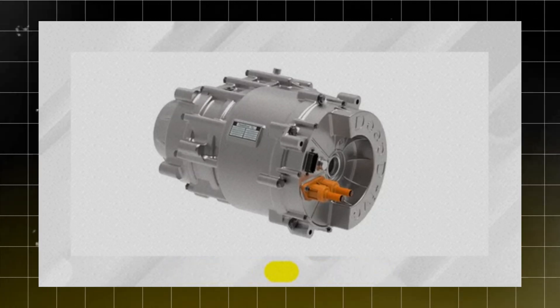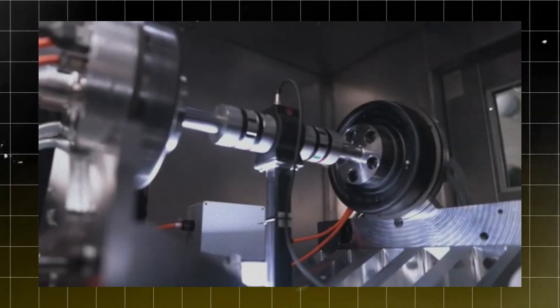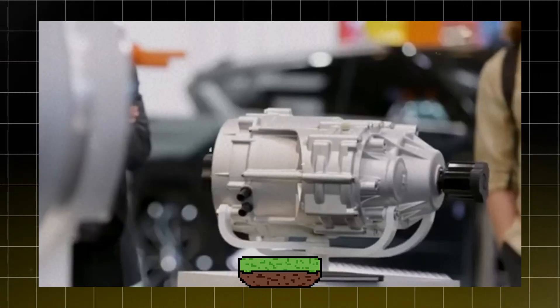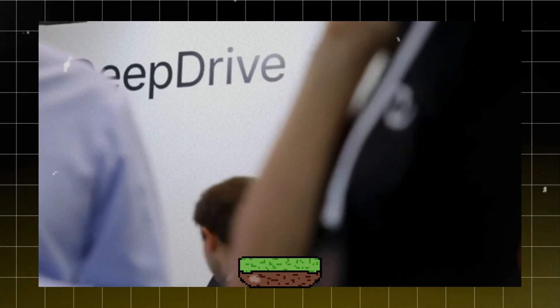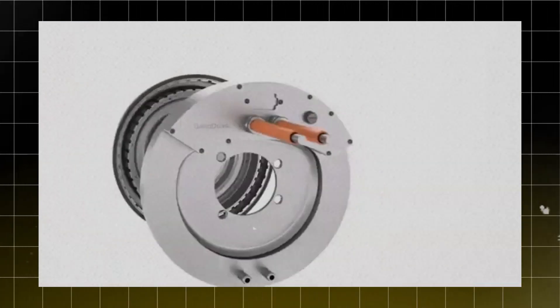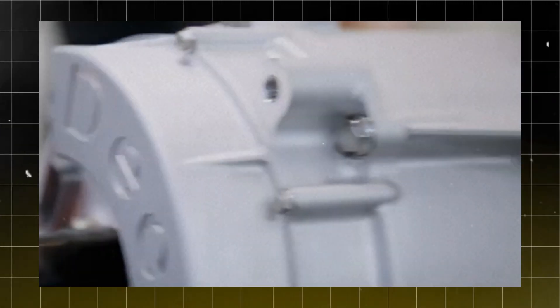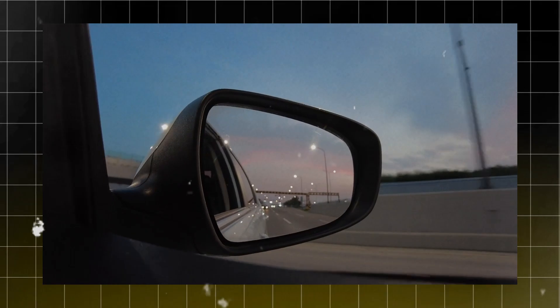The root of their optimism is the company's patented dual-rotor technology. Typical motors run the rotor either outside or inside the stator, but Deep Drive's motor does both. It sandwiches the stator between inner and outer rotors that run simultaneously, greatly increasing the torque and power produced within a compact housing.